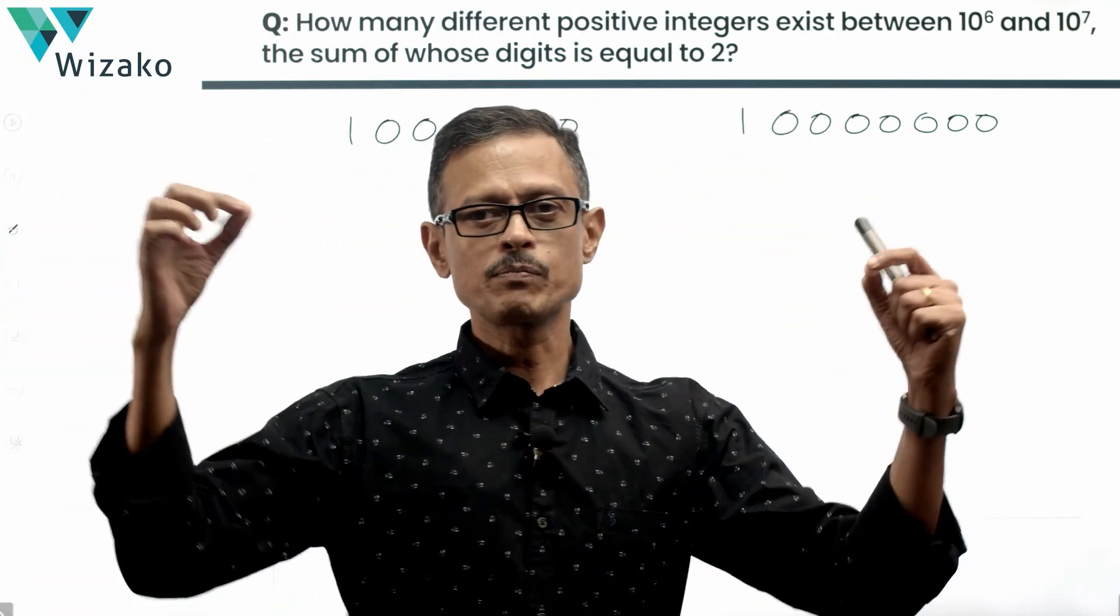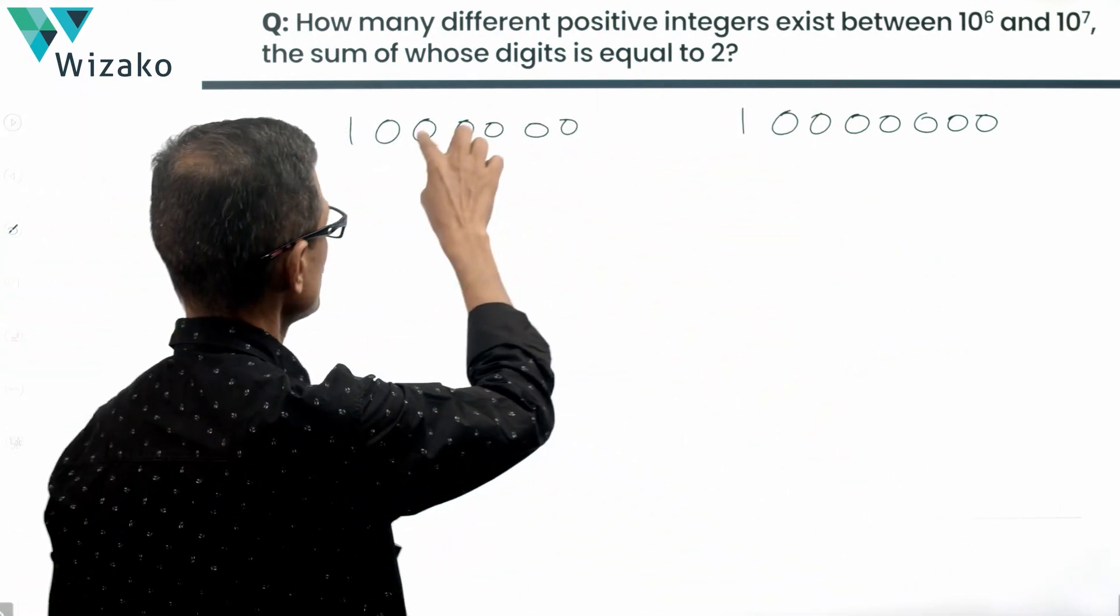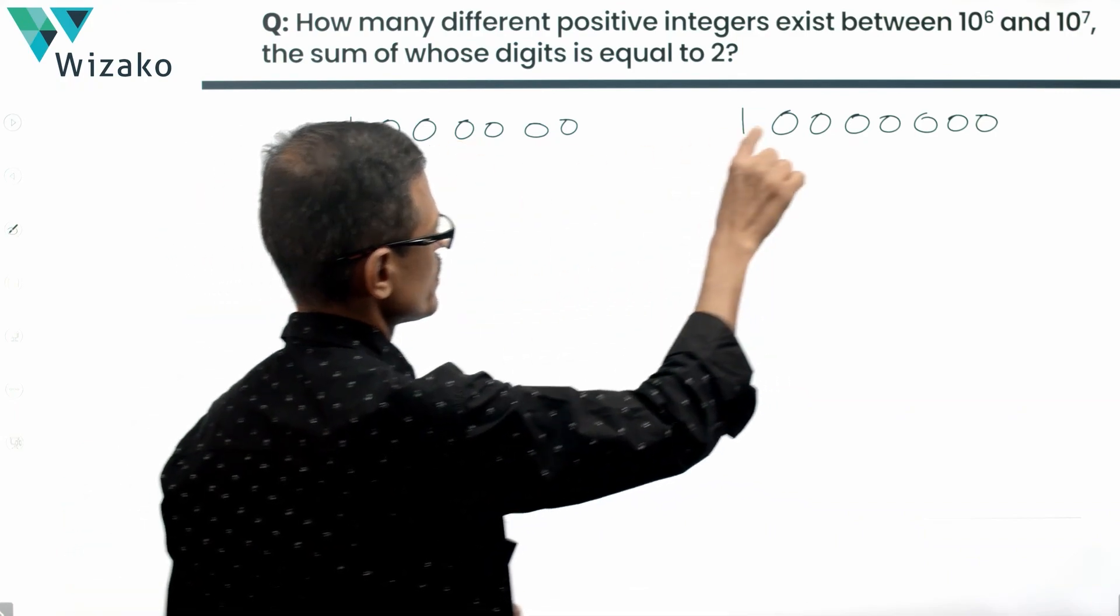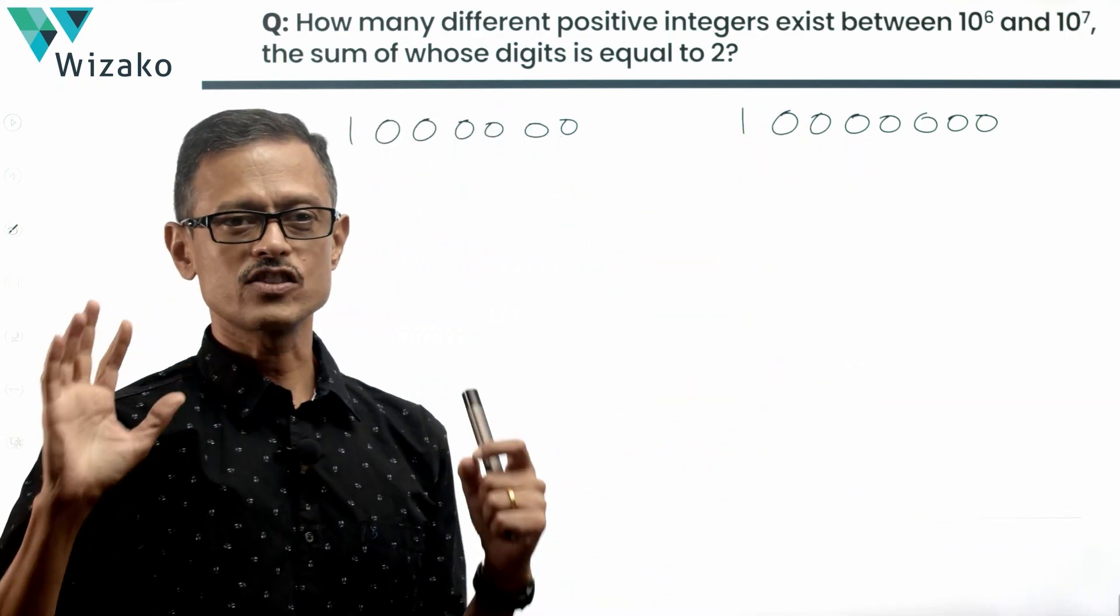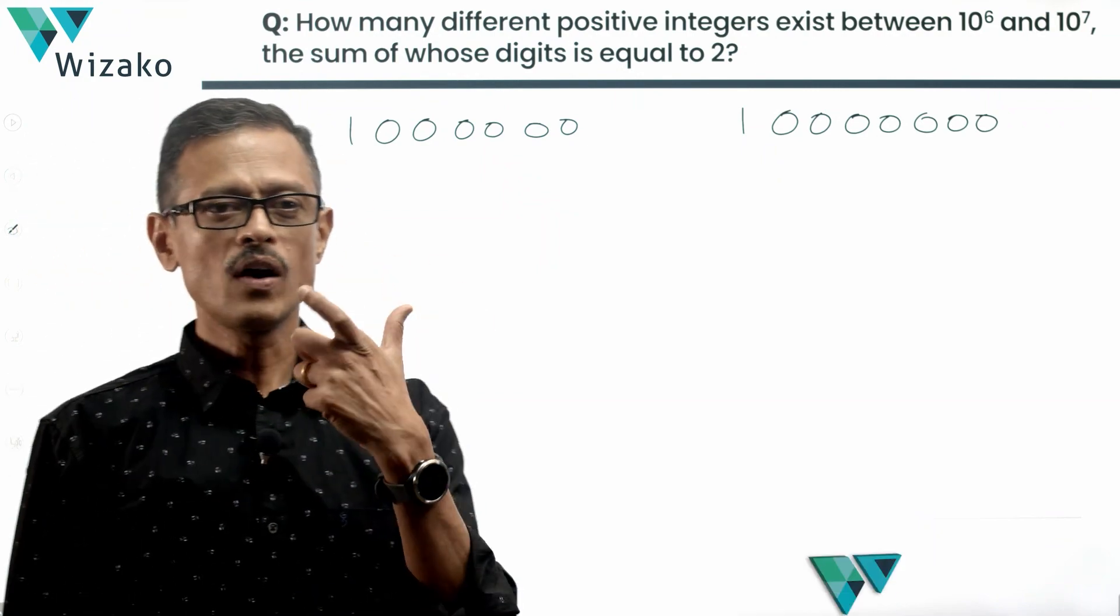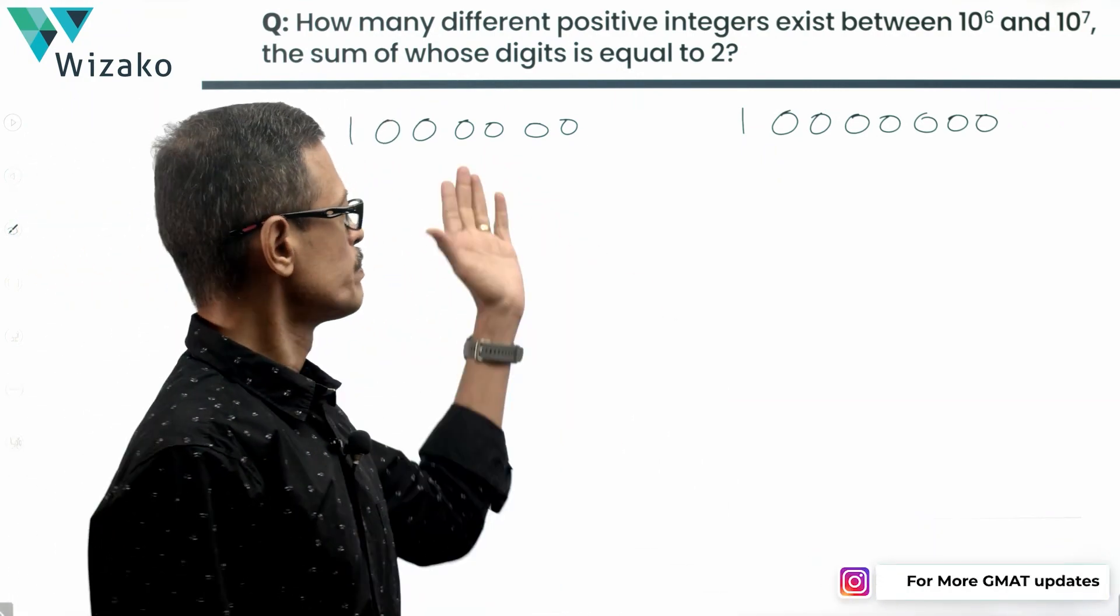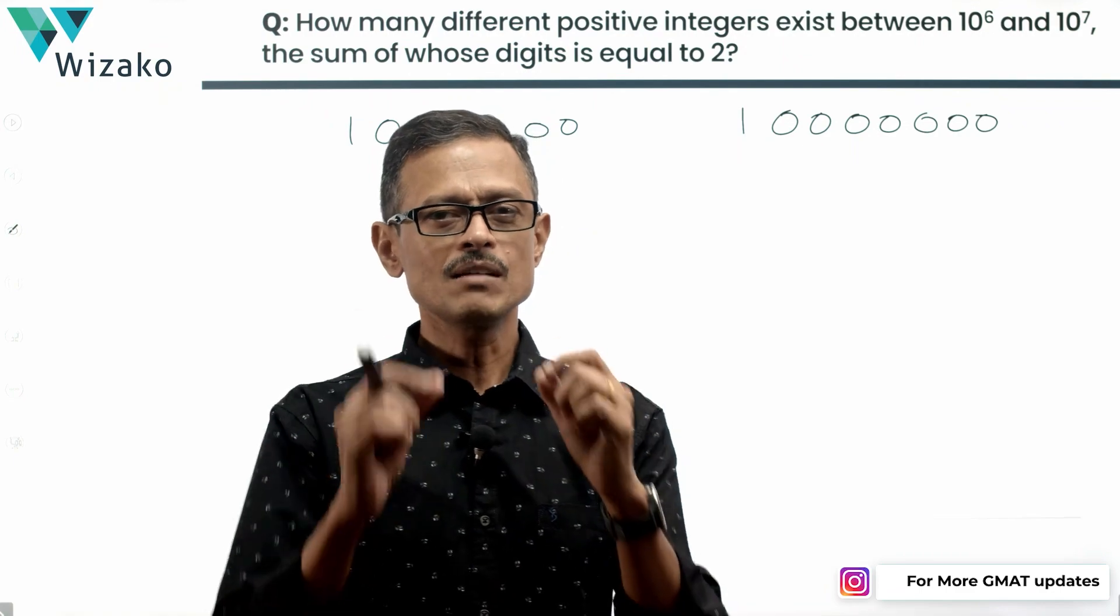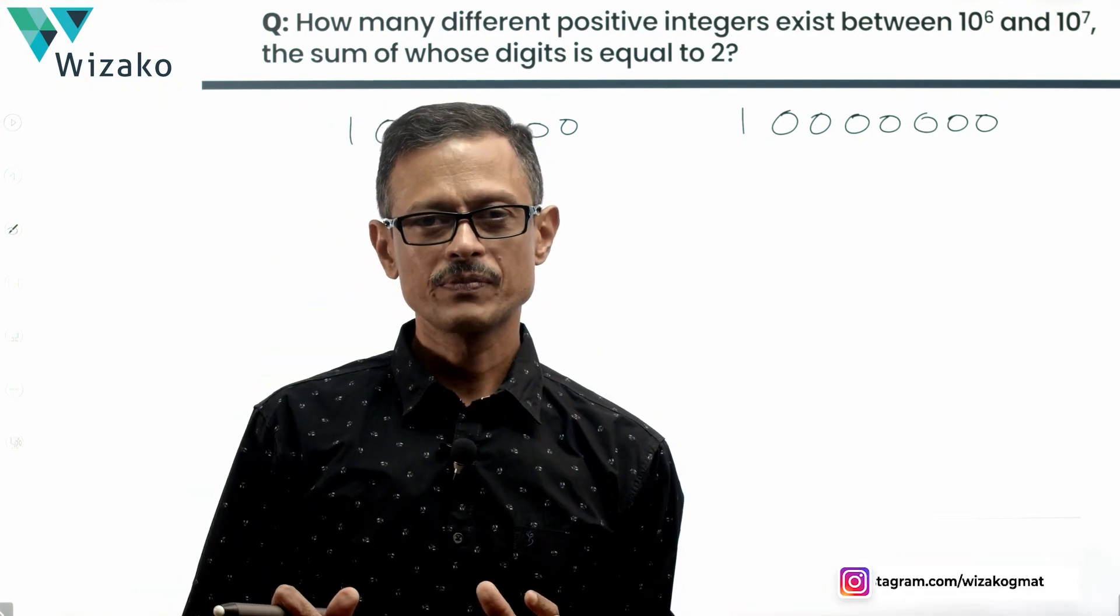First and foremost, whenever they say between, the end points are not counted. So we're not going to include this number 10 raised to the power of 6, nor are we going to include the number 10 raised to the power of 7. So essentially, this is where we start. Now, we want numbers which are positive integers between these two numbers, sum of whose digits is equal to 2.